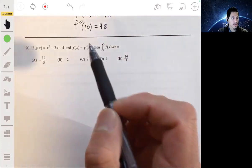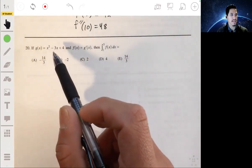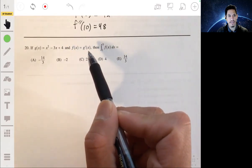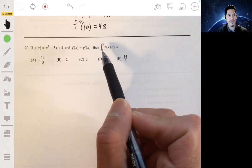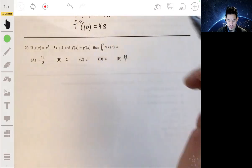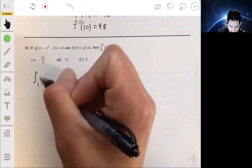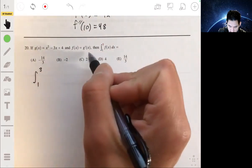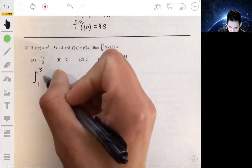20. We're given that g of x is x squared minus 3x plus 4, and f of x is g prime of x. And we've got to find the integral from 1 to 3 of f of x. So another way to just interpret this is just the integral of g prime of x.